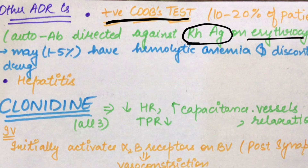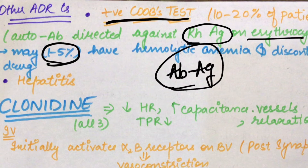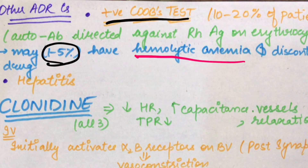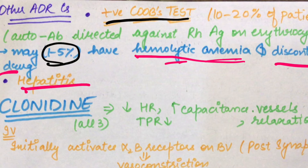The Coombs test is positive in 10 to 20% of patients. In 1 to 5% of patients, the antibody reacts with the antigen, destroying RBCs, which leads to hemolytic anemia. When auto-antibodies are created against our own antigens and destroy them, RBCs lyse and cause anemia. If hemolytic anemia is observed, we must discontinue this drug. Another ADR is hepatitis — liver inflammation.